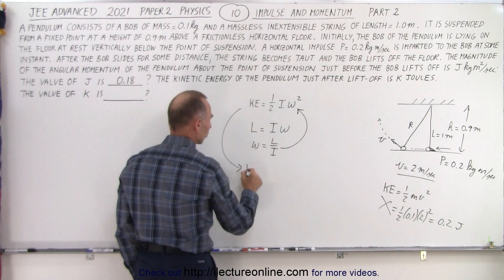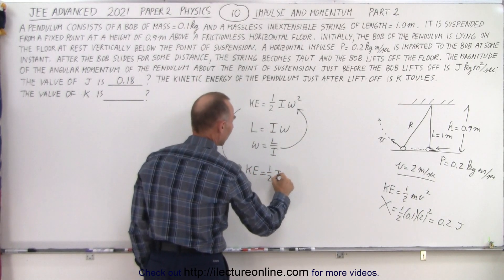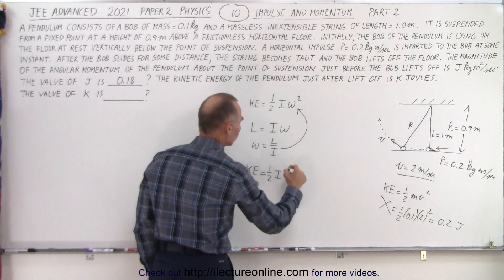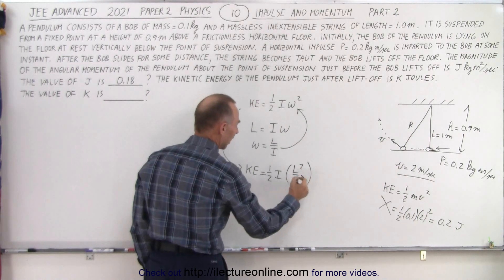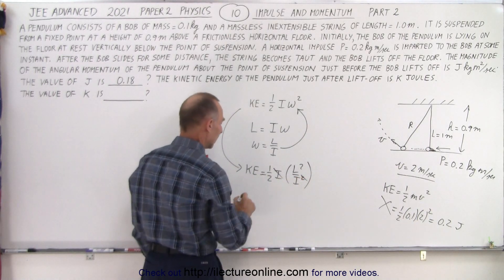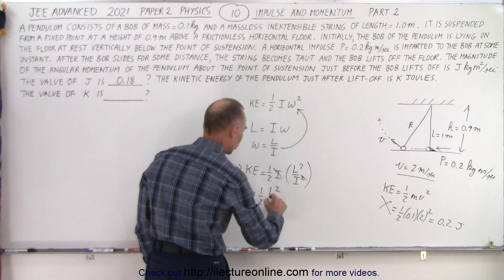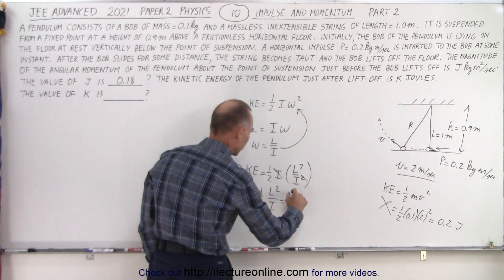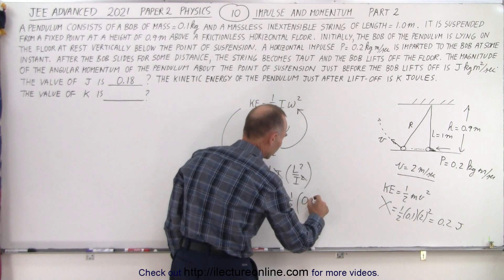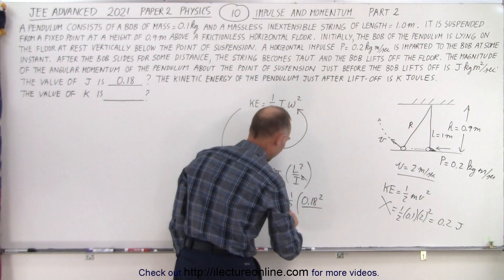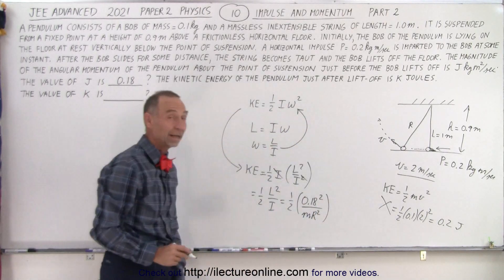So that means our kinetic energy equation now becomes 1/2 times I times omega, which is L over I, but of course we have to square those. That means that this I cancels out with that I, and we end up with 1/2 L squared over I. And so that would be 1/2 times 0.18 squared divided by I, which is MR squared.